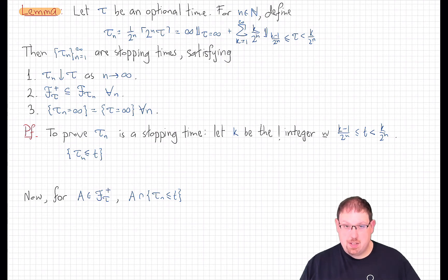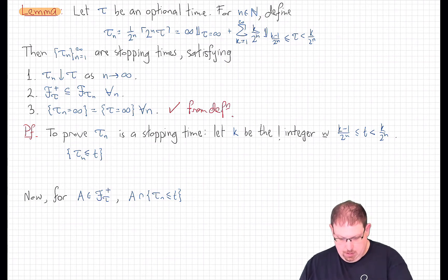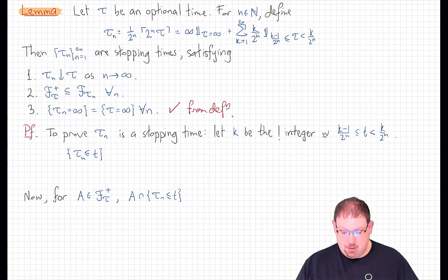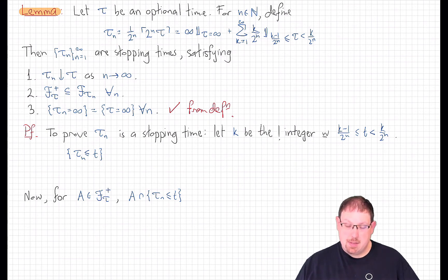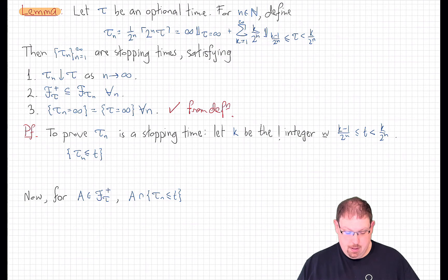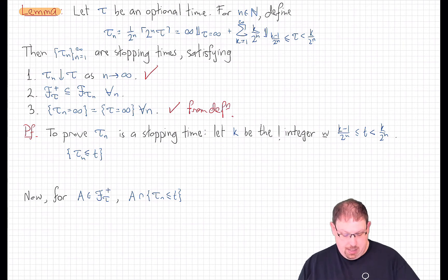Two of these statements are pretty clear from the start. The last one is immediate from the definition, since tau_n is infinite exactly where tau is infinite and finite otherwise. The convergence property follows for any real number tau: tau_n is defined to be k/2^n where k is the smallest integer greater than 2^n times tau, so k/2^n is bigger than tau, and as you increase n this approximation can only decrease. The fact that tau_n converges to tau follows from the density of the dyadic rationals in the reals, and this holds pointwise.